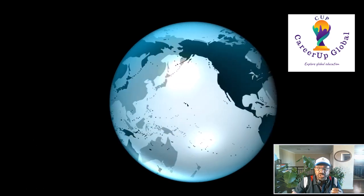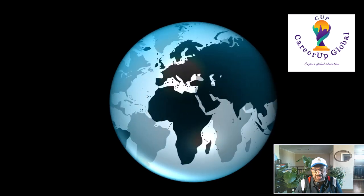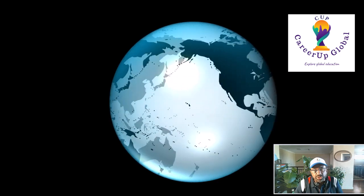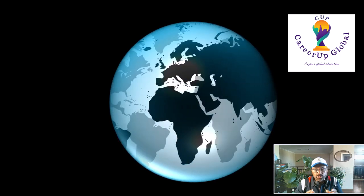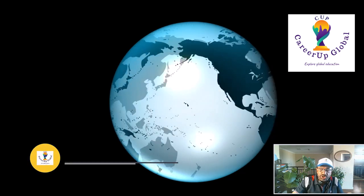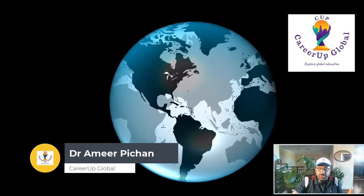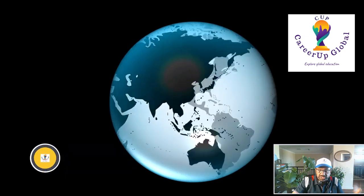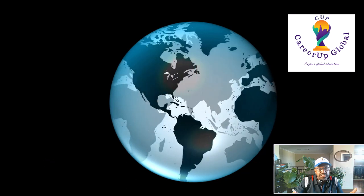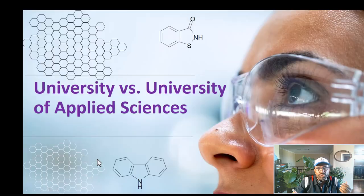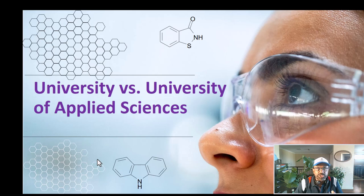International students often find it hard to grasp what distinguishes a normal university from a University of Applied Sciences. In this video I am going to explain those differences — something you need to know if you are planning for higher education especially in Europe. You are listening to Dr. Amir Pichan from Career Up Global. University of Applied Sciences are institutions of higher education, widely spread in German speaking countries and very popular in Germany.